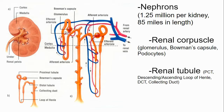These nephrons, simplified as they look, number 1.25 million per kidney. If you stretched out all the nephrons, they'd be 85 miles in length — that's incredible.